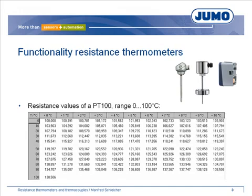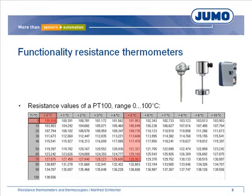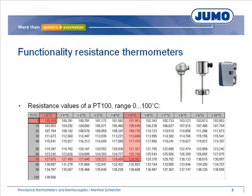The resistance value of a PT100 at 0°C is 100 Ohm. At 75°C, the resistance value is 128.987 Ohm. Furthermore, resistance thermometers like PT1000 with a basic resistance of 1000 Ohm, PT500 with 500 Ohm, and PT50 with 50 Ohm are used. Generally, all kinds of basic resistances are possible.